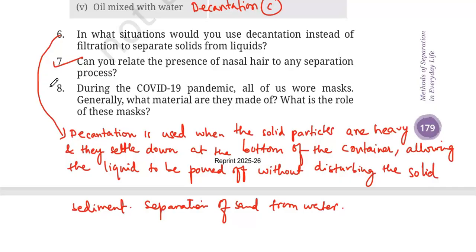Question number eight: During the COVID-19 pandemic, all of us wore masks. What material are they made of, and what is their role? Masks are generally made up of multiple layers of fabric or materials such as cotton, polypropylene, or polyester. Their role is to filter out harmful particles — viruses, pollutants, and dust in the air we breathe are filtered out. This is also similar to the filtration process in which impurities are removed from a fluid.